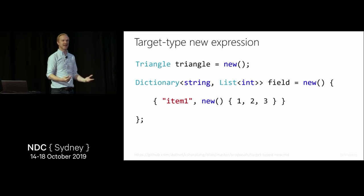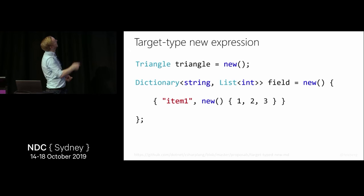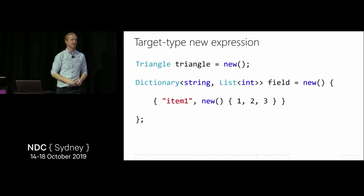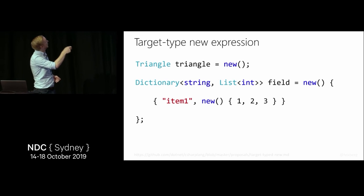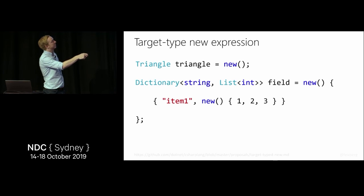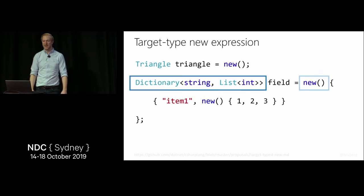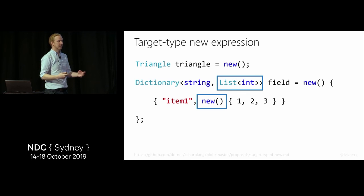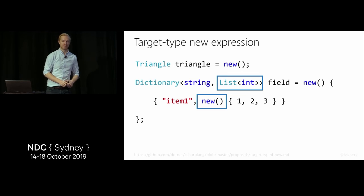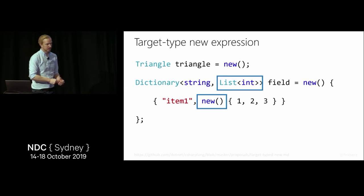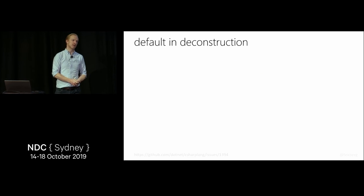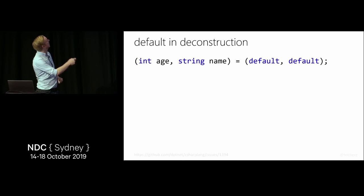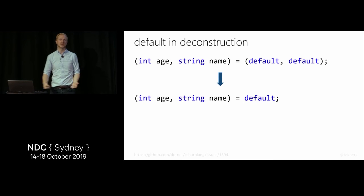One thing is target-type new expressions. Instead of specifying the type you're creating on both sides, you move it to the variable declaration side. We're not saving many characters, maybe three or four. But where it becomes interesting: I'm creating a Dictionary<string, List<int>> and can just say 'new' on the right side inside a collection initializer, and it figures out the type. This requires a runtime change so they'll probably wait for .NET 5.